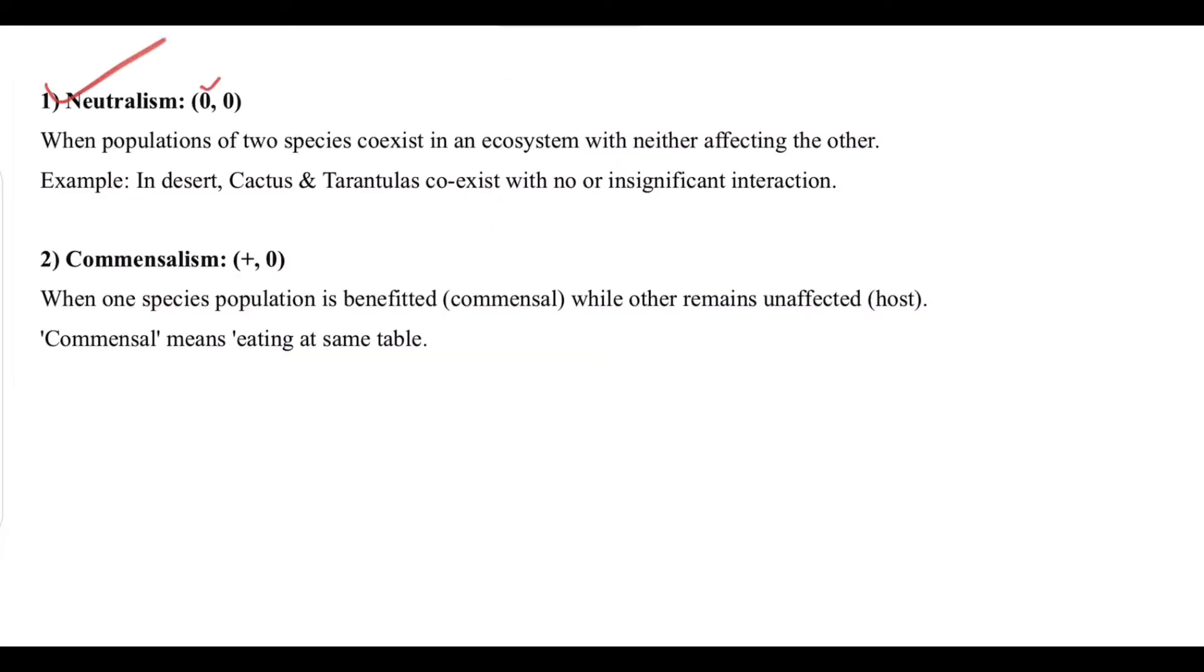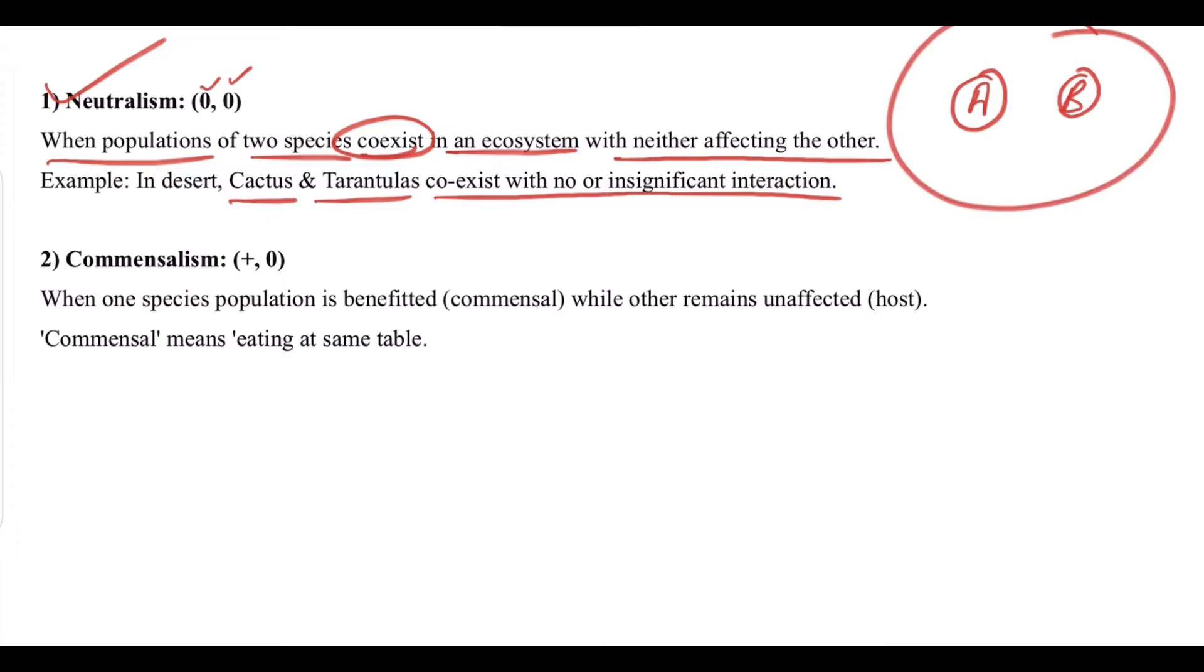Neutralism, which is zero zero, means both are neutral to each other. When populations of two species coexist in an ecosystem with neither affecting the other. For example, cactus and tarantulas coexist with no or insignificant interactions. They live in the same ecosystem but have no relationship between them. They just live independently of each other.